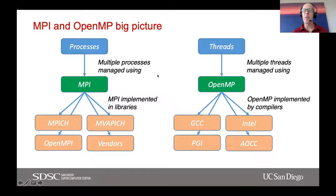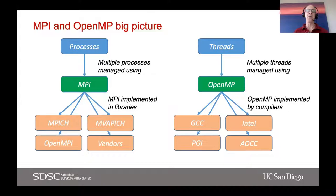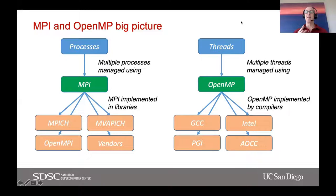Another question: can shared memory programs cause memory corruption? Even though shared memory programs are easier to write, they can get you into trouble — you need to be careful that threads aren't writing into each other's memory. If you're an end user of a well-written code like VASP, GROMACS, AMBER, NAMD, or WRF, this is probably not going to be a problem. But yes, it can cause memory corruption if the code isn't written properly. Whereas with MPI, since you're working with multiple processes that are more isolated, they each work in their own sandbox.